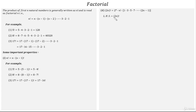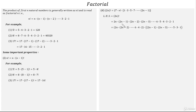Consider LHS as factorial 2n. According to the definition of factorial, factorial 2n is the product of the first 2n natural numbers. Now in this we are separating the even factors and odd factors — grouping even factors together and odd factors together. Here 2n, 2n-2, 6, 4, 2 are even, and 2n-1, 2n-3, 5, 3, 1 are odd.